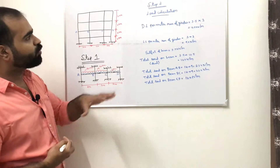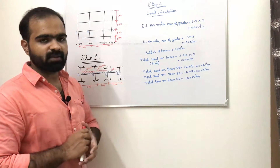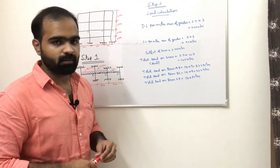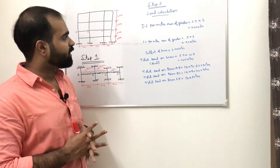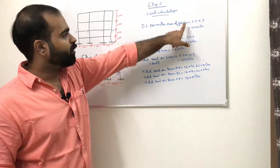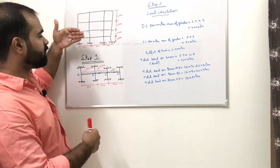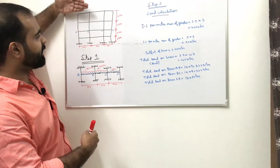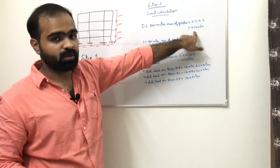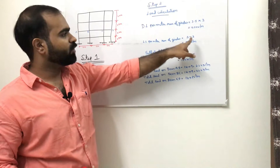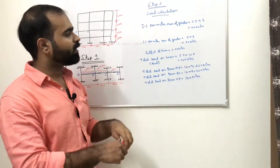Step number 2 is load calculation for the substitute frame. Dead load per meter run of girder: the slab dead load is 3.5 kN/m² multiplied by 3 m spacing, giving 10.5 kN/m. The live load is 3 kN/m² multiplied by 3 m, giving 9 kN/m.